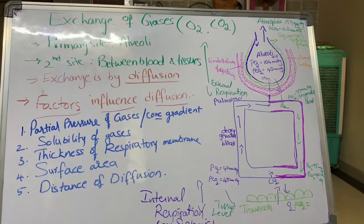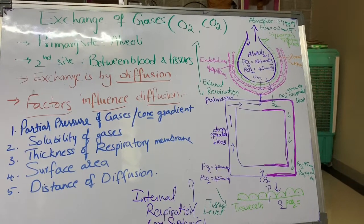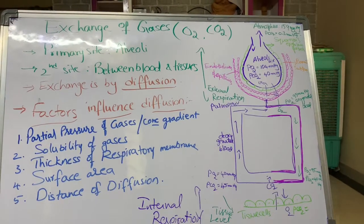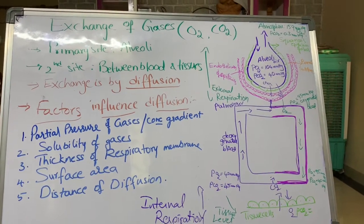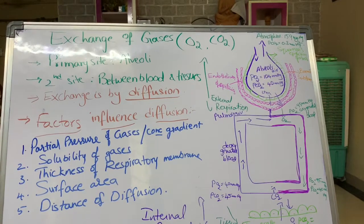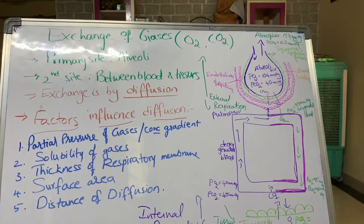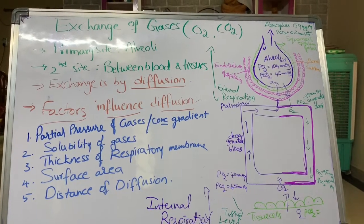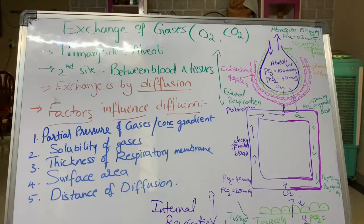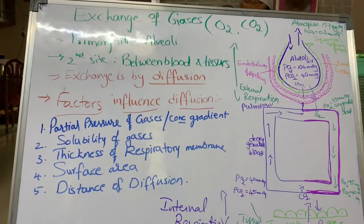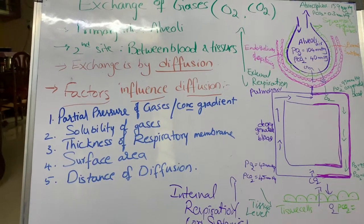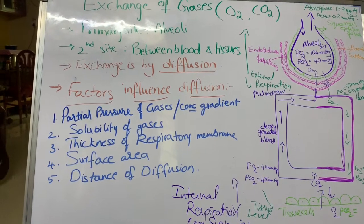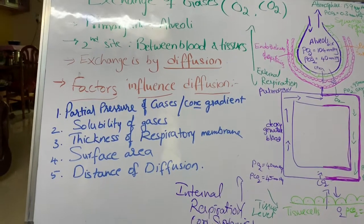Welcome to another class on the respiratory system. In this class we are going to discuss the exchange of gases — exchange of oxygen and carbon dioxide. The primary site for exchange of gases is the alveoli, which are sac-like structures present in the lung region.